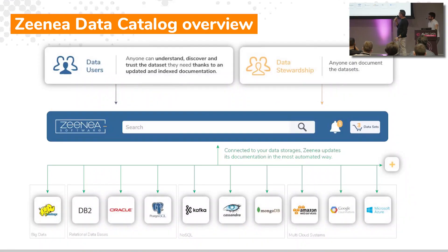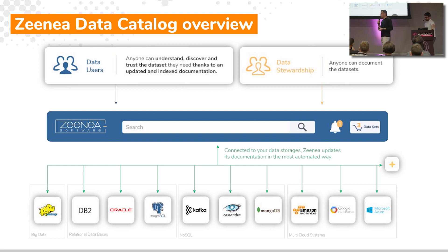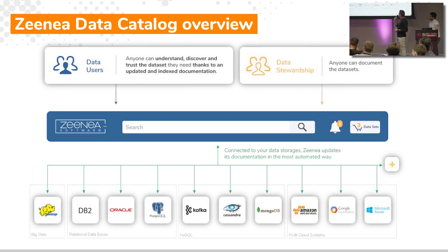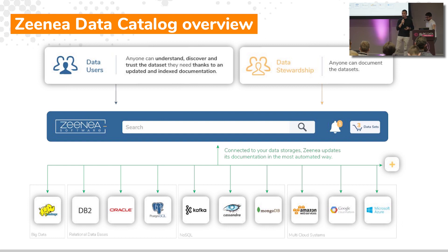We connect to all these sources, grab all the metadata, and use our algorithms and automation to populate properties or notify data stewards when something is weird in the documentation or requires attention — so they can check and ensure the information is correct. At the center of the system is a search engine used by end users to find assets and all information about them, especially compliance, ethical, or security restrictions they need to comply with before using the data.